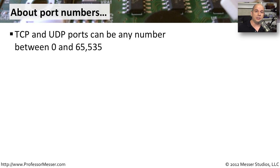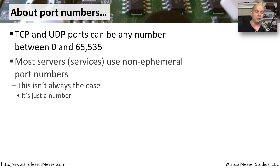Since client machines are using these temporary port numbers, we're going to need a lot of them. In TCP/IP, we can have TCP and UDP port numbers between 0 and 65,535, giving plenty of room to open connections and use temporary port numbers. Most servers are going to use permanent, non-ephemeral port numbers that will never change.